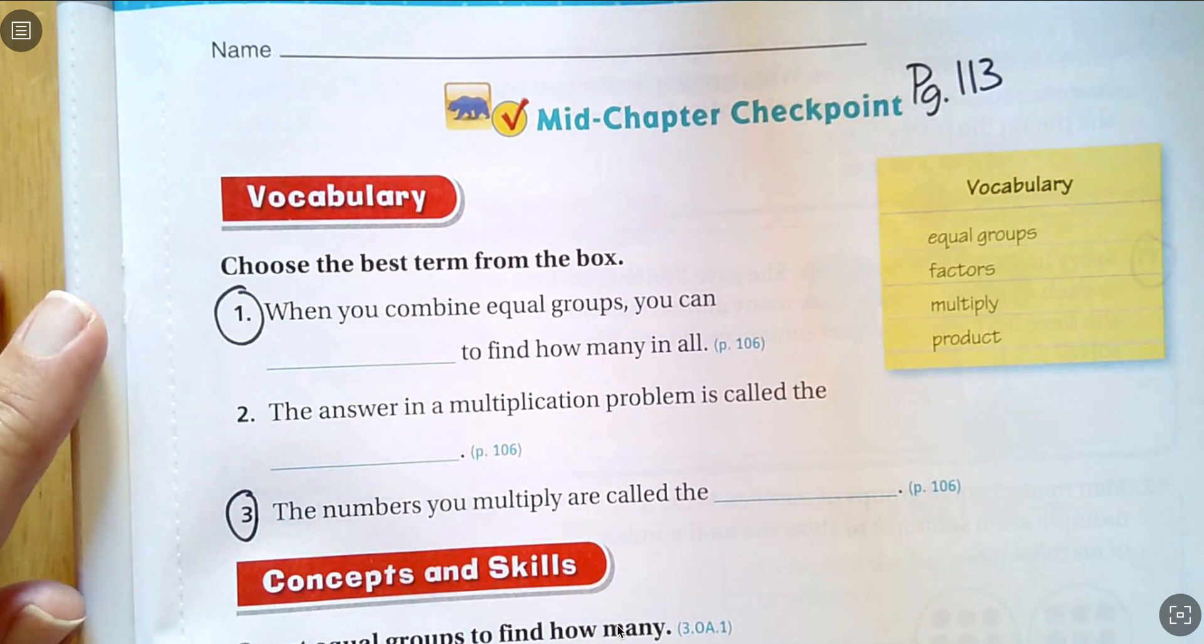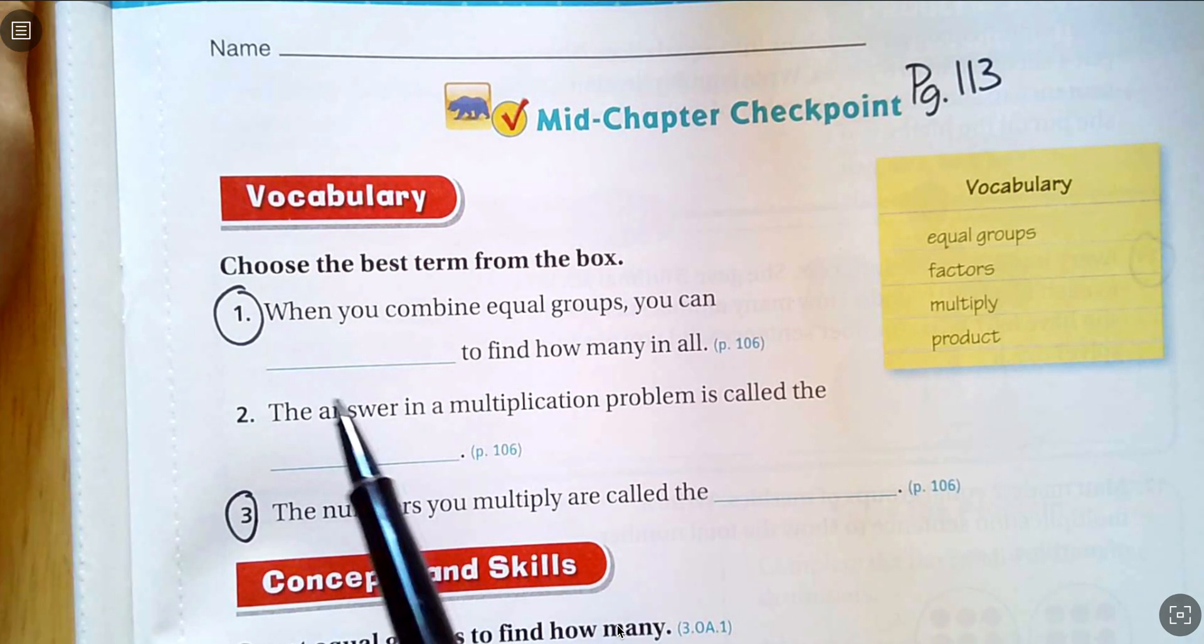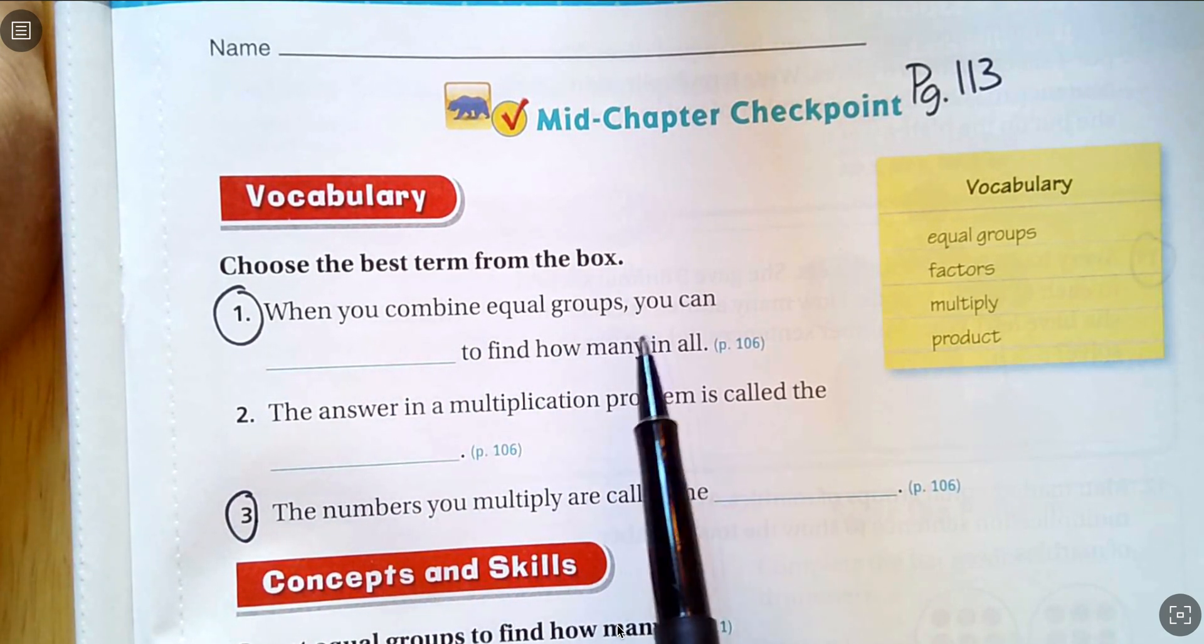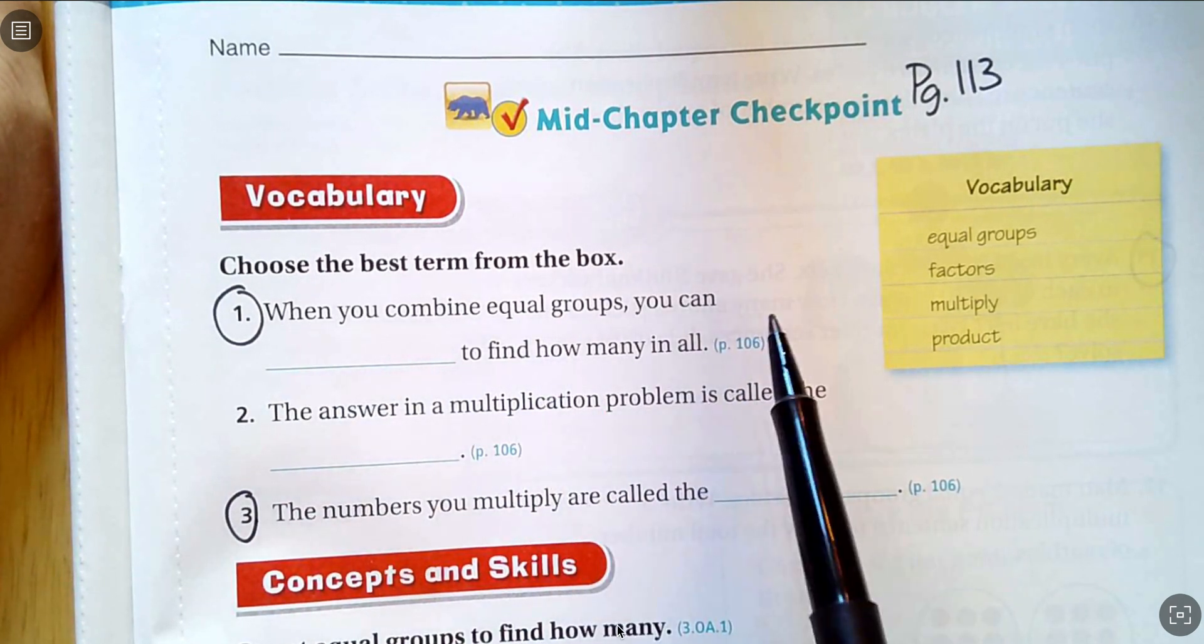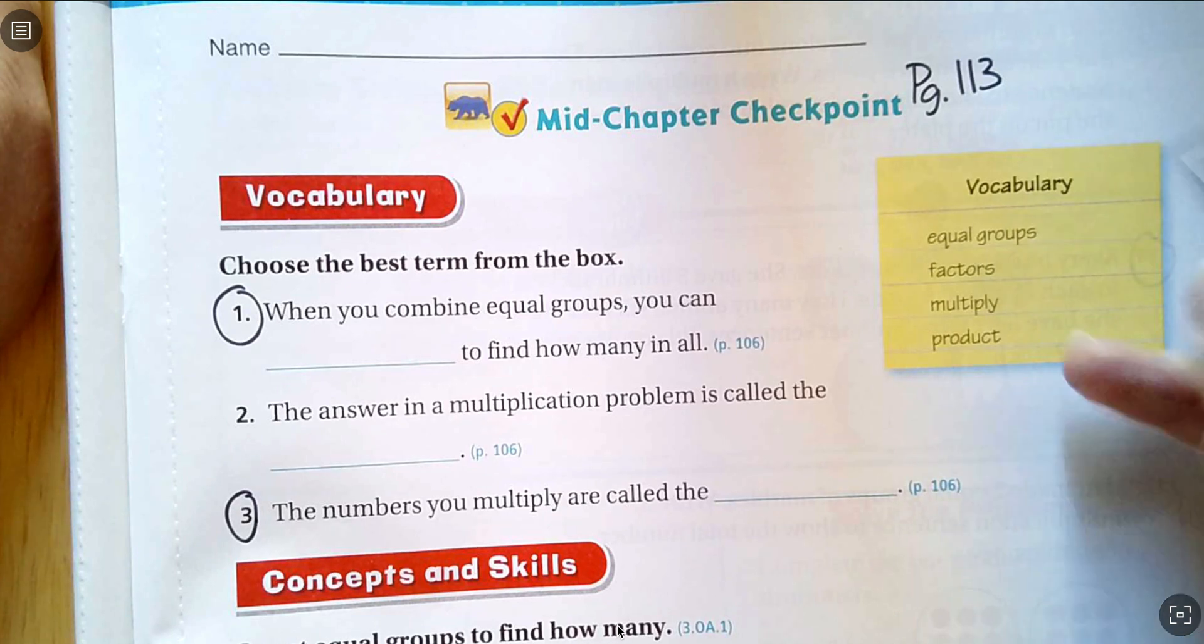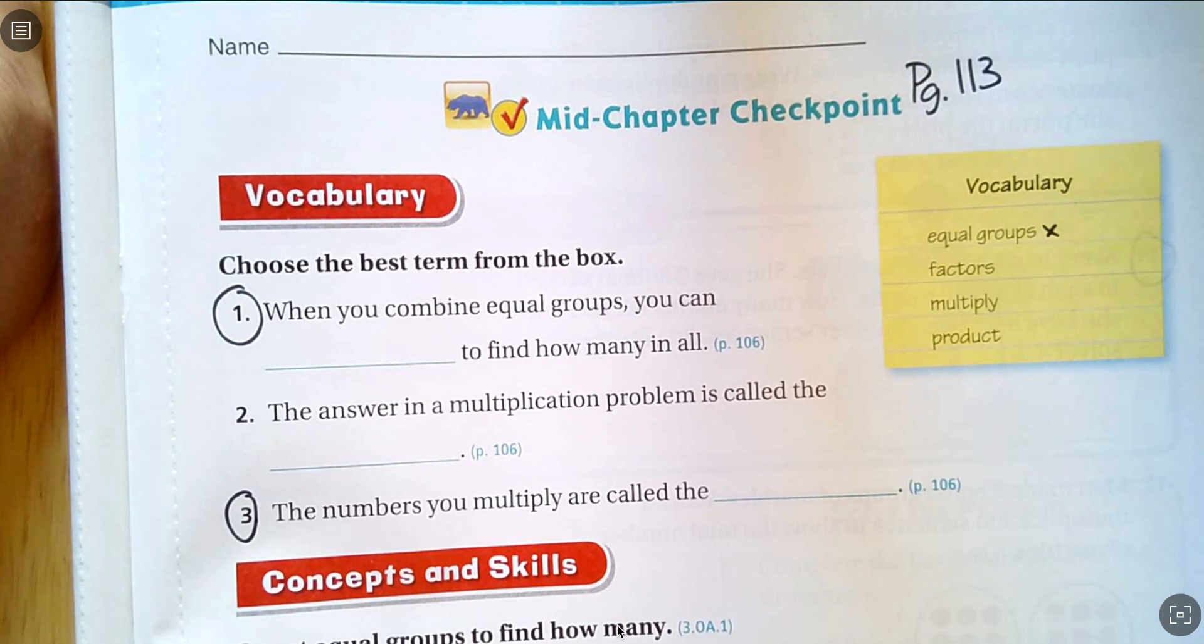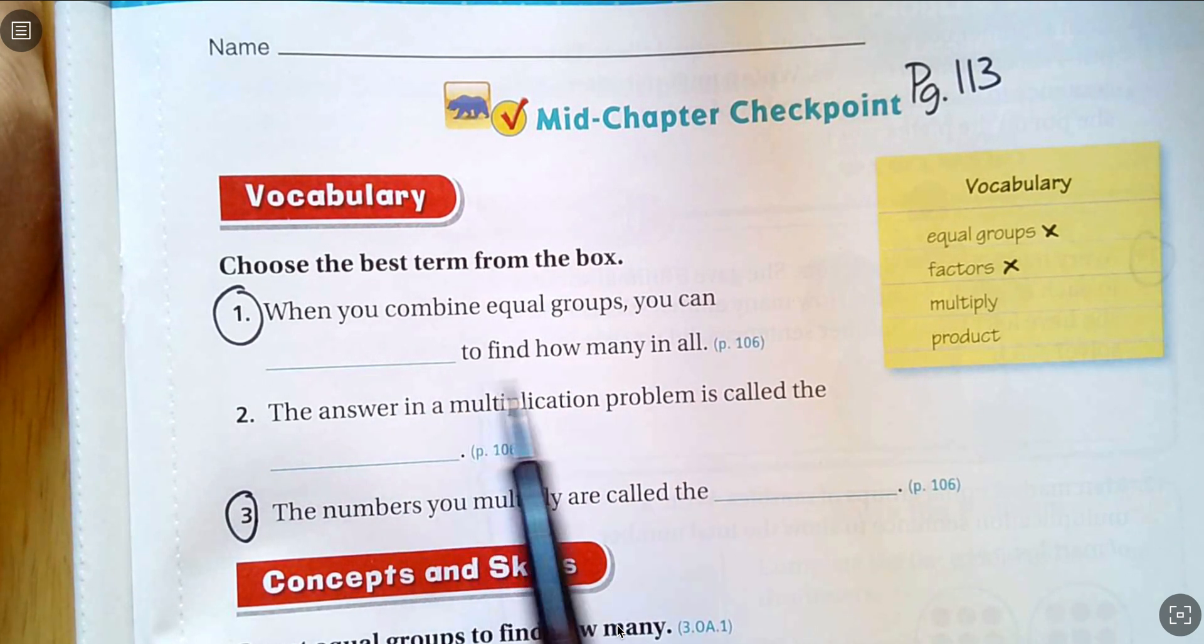So numbers 1 and 3 are vocabulary and so I need to try to figure out what word or words will fill in the blank correctly. So when you combine equal groups you can blank to find how many in all. When you combine equal groups you can multiply to find how many in all?